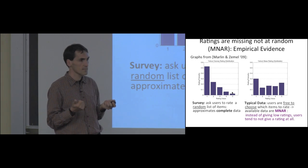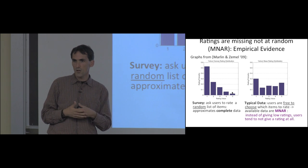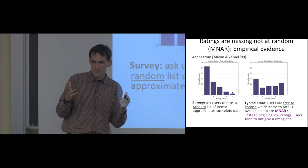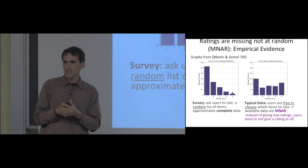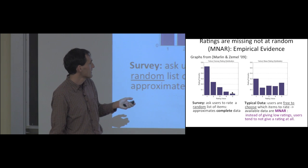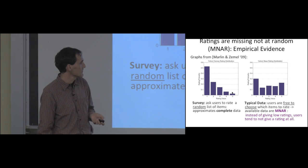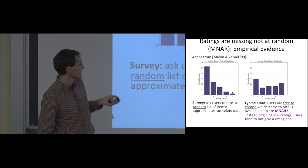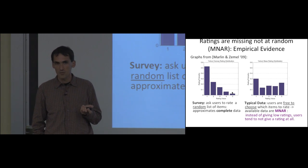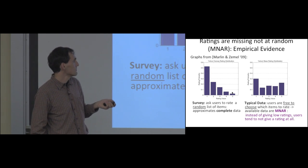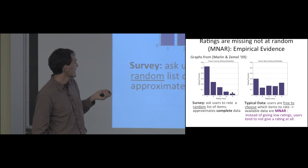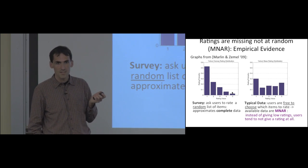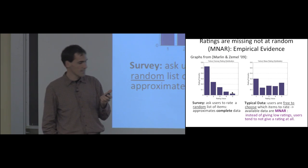When users have freedom to choose what items to rate, instead of giving a low rating they just don't give a rating at all. The key challenge is that we have this biased data for training and testing, but user experience — whether they like the recommendation — actually depends on the true distribution. This is the disconnect. So what can we do about that?